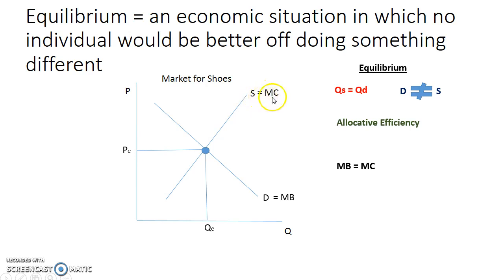We could replace the supply curve with the marginal cost curve, the additional cost from producing one more unit of output. The intersection of the marginal private cost and the marginal private benefit gives us that allocatively efficient amount.